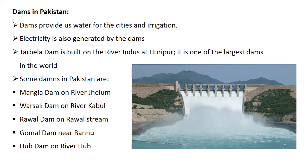In Khyber Pakhtunkhwa there are numerous mountain ranges that get heavy snowfall in winter. When this snow and ice melt in summer, many streams and rivers are formed. I hope you understand the chapter. If you have any questions, you can ask in the Google Classroom. For better understanding, you should read the book. Thank you so much.